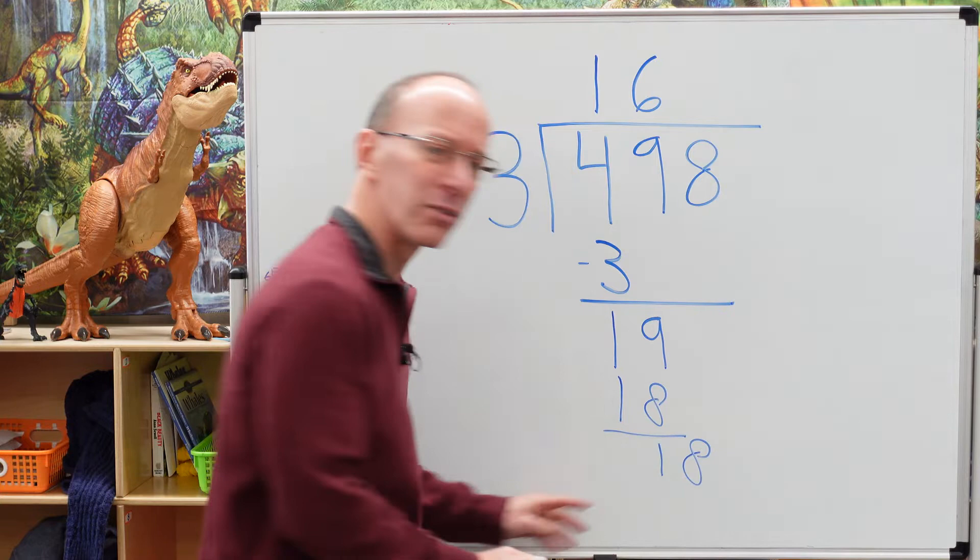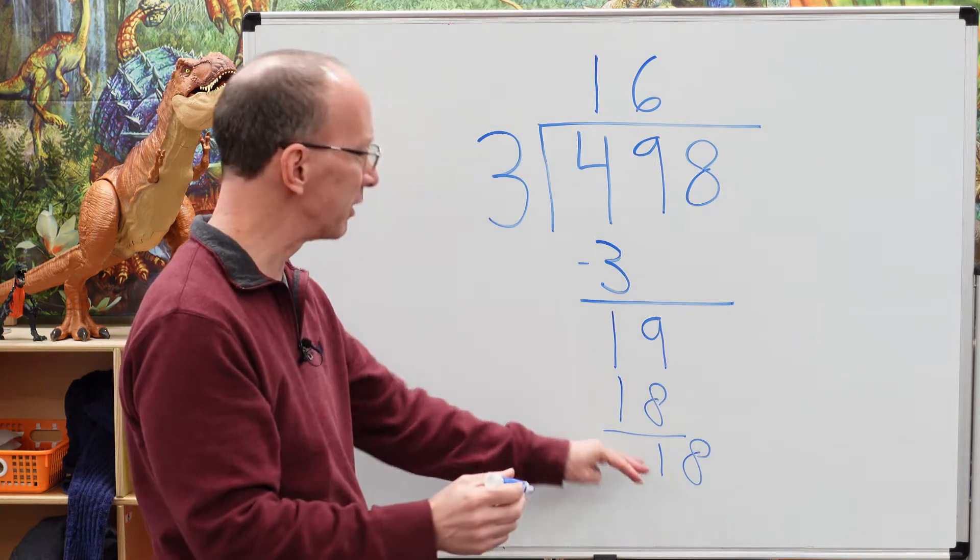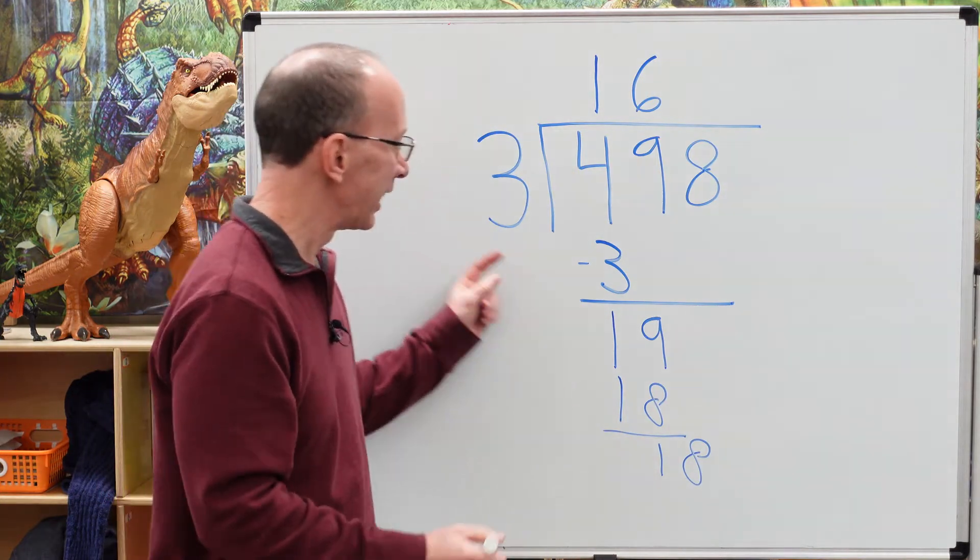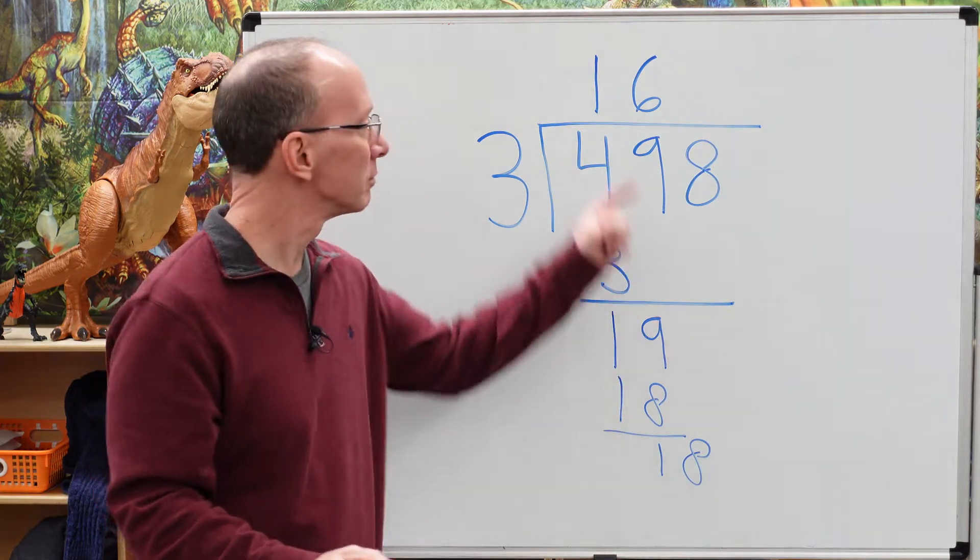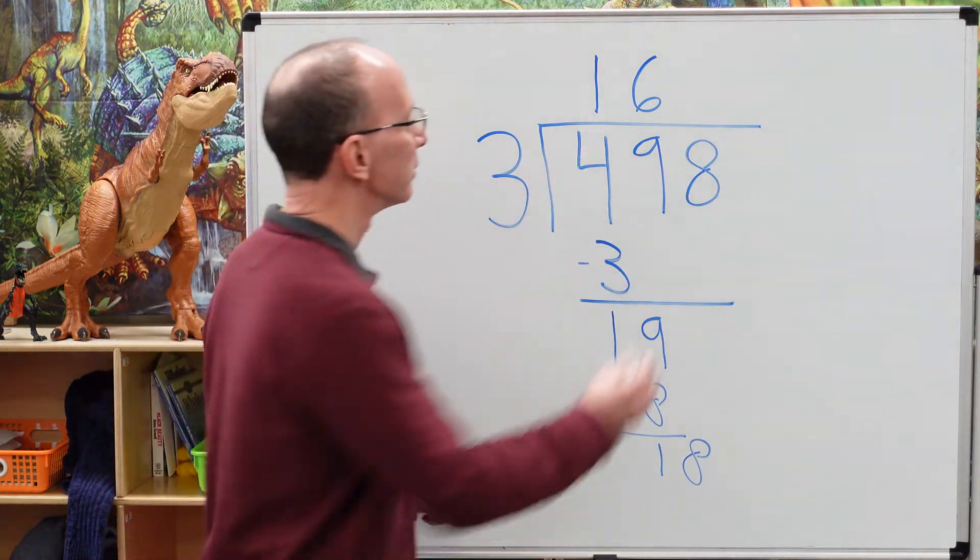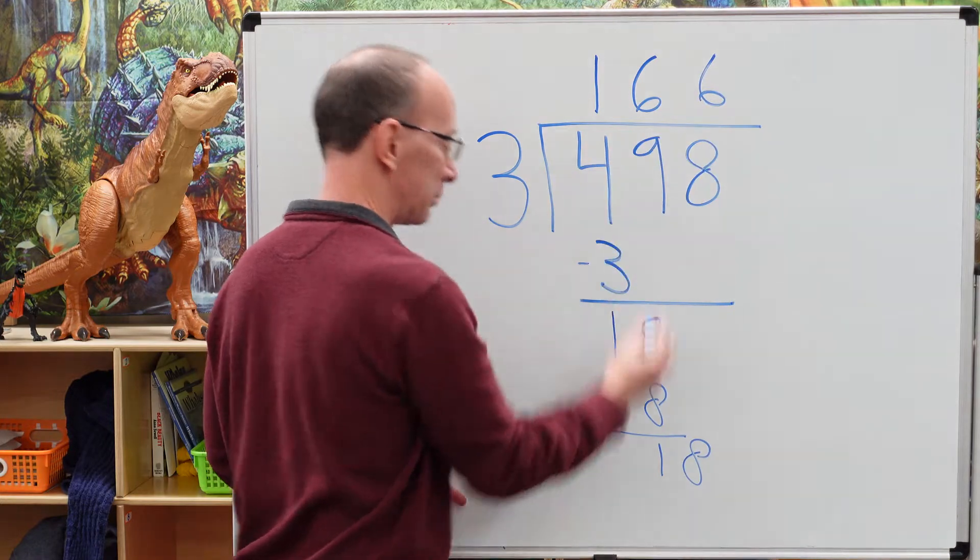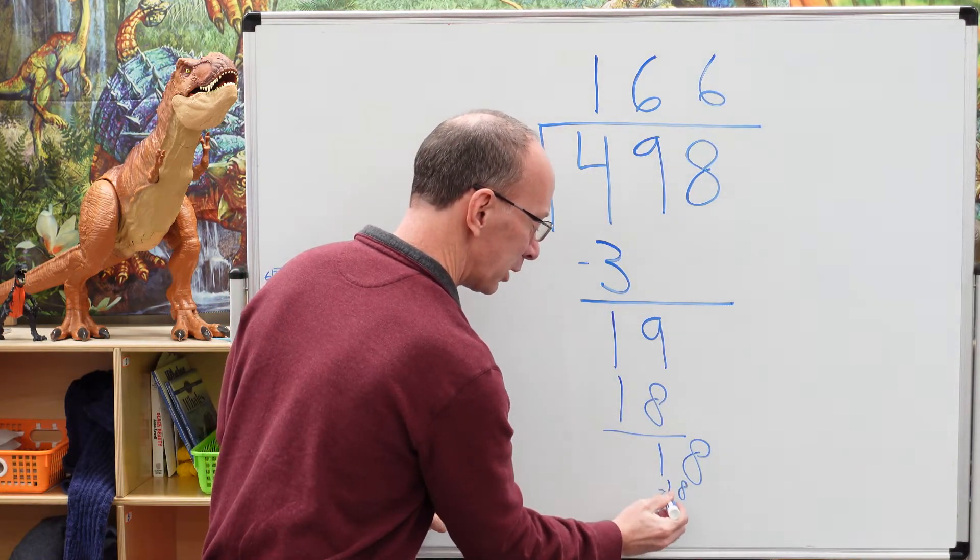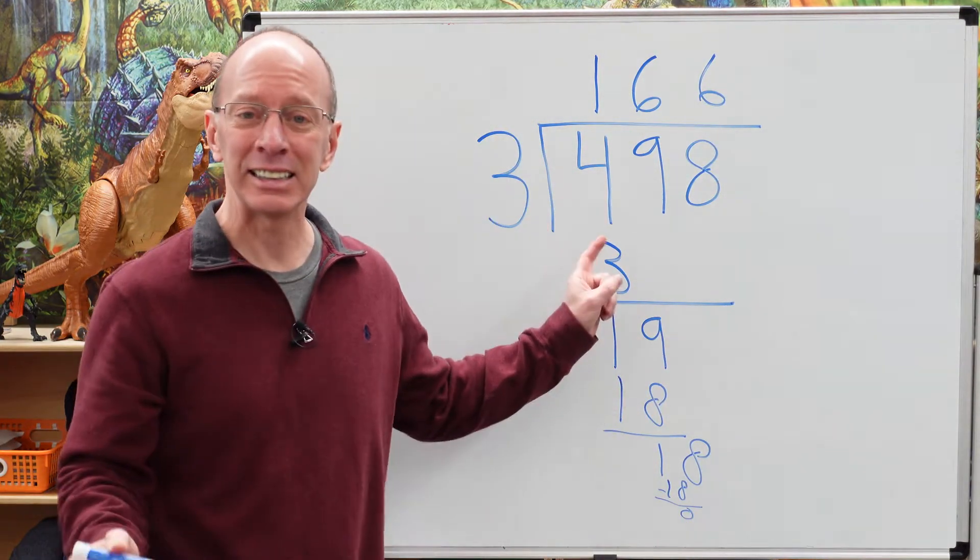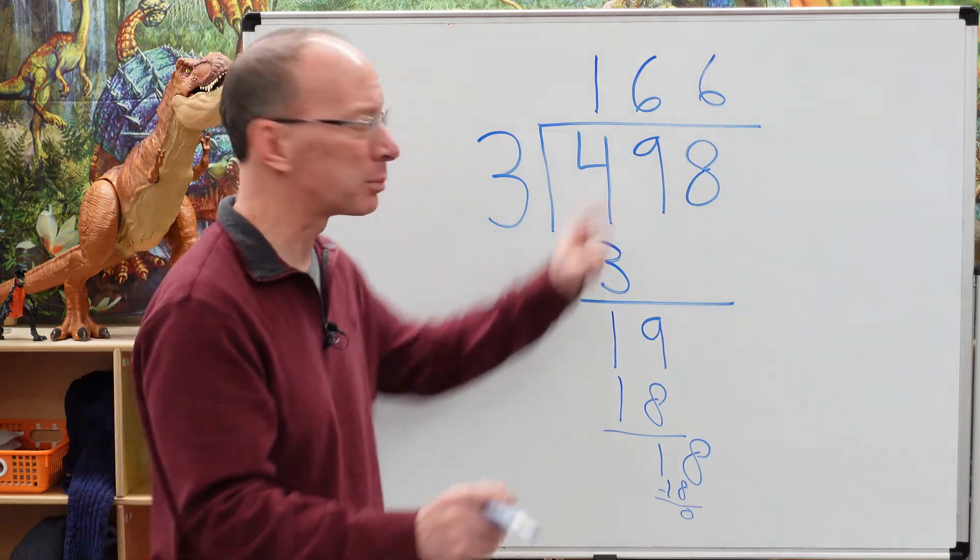18. I'm going to start writing a little bit smaller. I'm way down here on this board. That's okay. How many times can I put three into 18? Six. Six times three is 18. I'm going to put that 18 really small with a zero for a remainder. We don't even have to put zero up there.